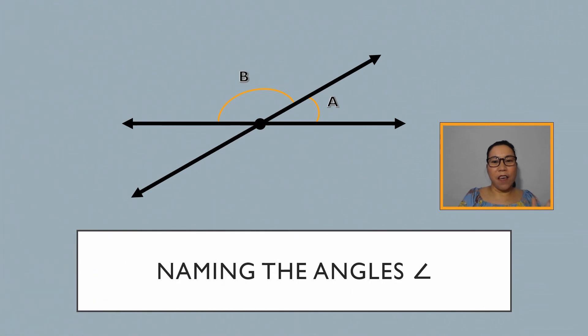Remember class, if you see a letter next to an arc, it is the name of an angle.